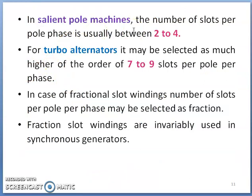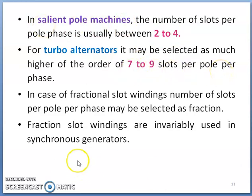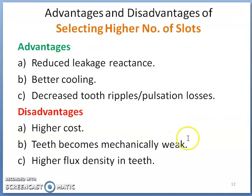For salient pole machines, the number of slots per pole per phase is usually between 2 to 4. For turbo-alternators, the number of slots per pole per phase is more — typically 7 to 9. Sometimes, fractional slot windings are also used in synchronous generators, in which case the number of slots per pole per phase may be selected as a fractional number.